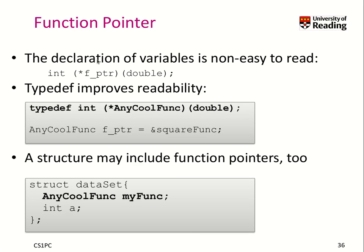Non-arguably, the declaration of variables is really not easy to read. We had this strange notation to say f_ptr is a function pointer. Typedefs can help a lot here to improve readability. We create a new type called n_equal_func, which is basically our function that takes one argument and returns an integer. While the typedef definition is still a bit hard to read, it's much easier to then say f_ptr is of type n_equal_func and assign square_func to it.